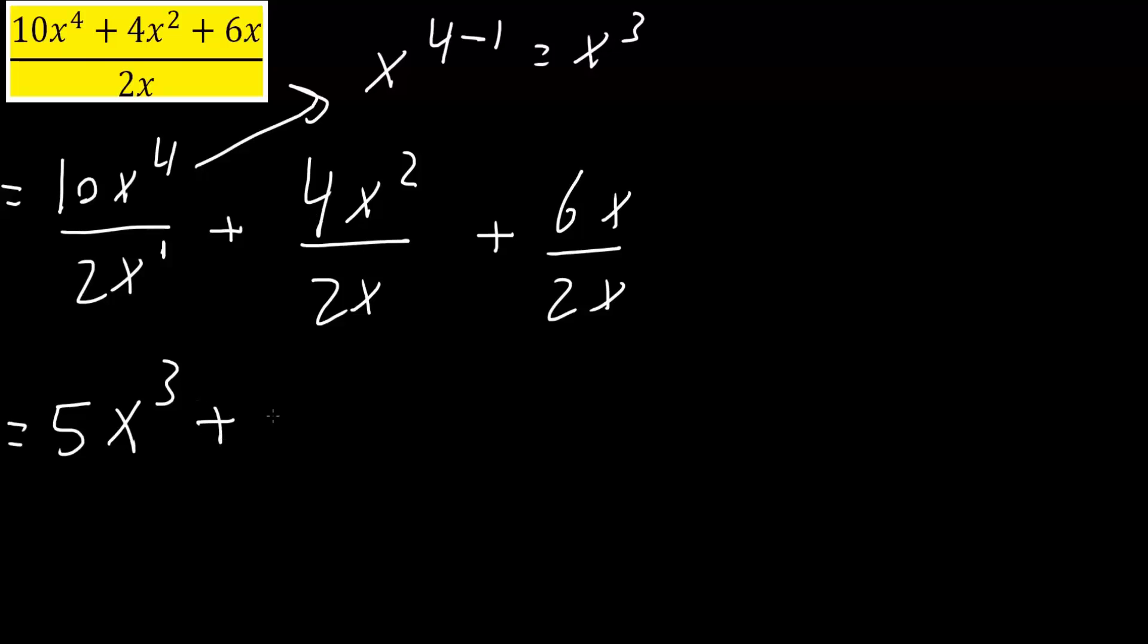Plus 4 divided by 2 is 2, x raised to 1 because 2 minus 1 is 1, plus 6 divided by 2 is 3, x divided by x is 1 so the x's are gone. And so the final answer is 5x cubed plus 2x plus 3. And that's all we need to do for these two problems.